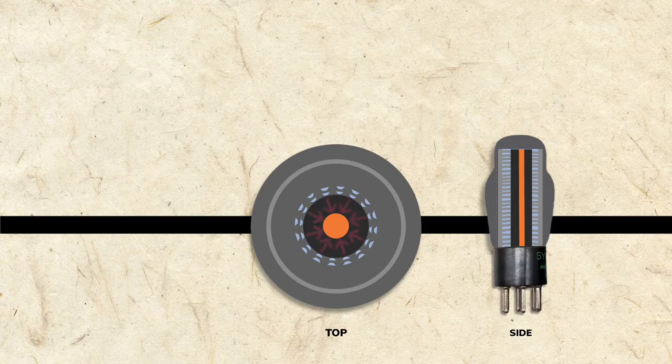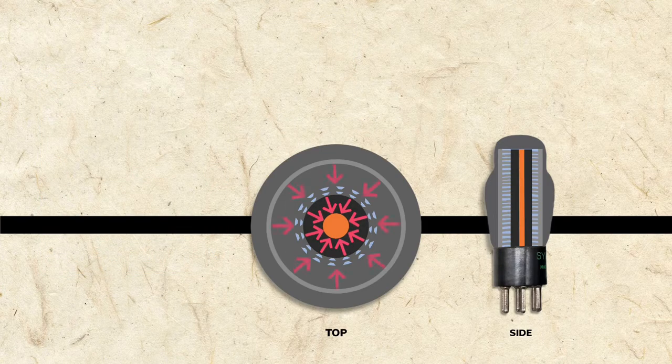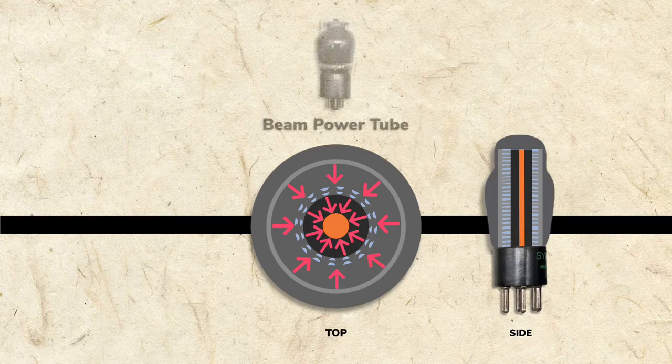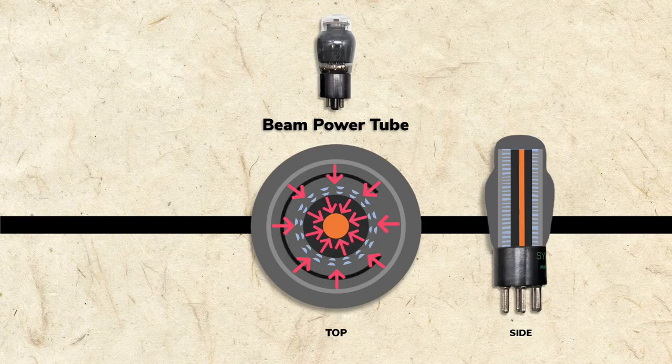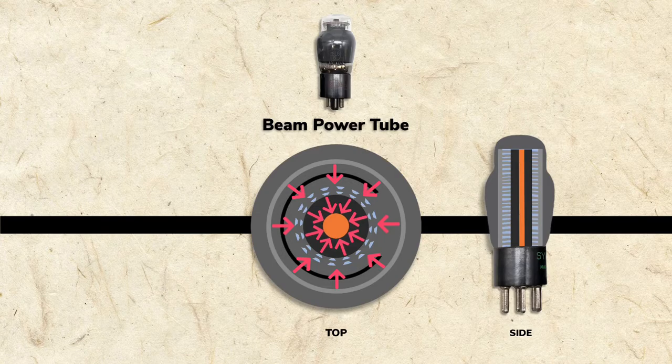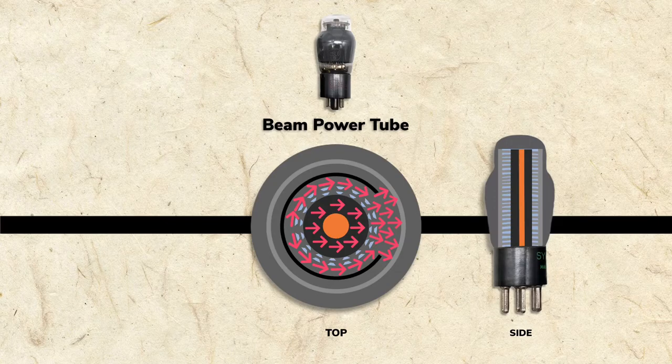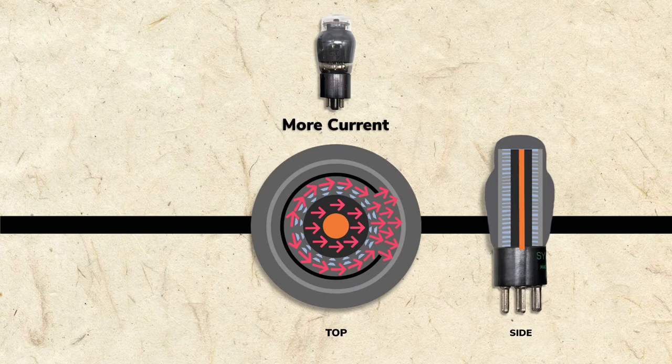With a typical tube, electrons that bounce off the screens and plate often don't contribute to current flow. Beam power tubes use the negatively charged beam plate to repel these stray electrons and force them into a concentrated electronic beam. This way, more electrons are conducted from cathode to plate and power output increases.